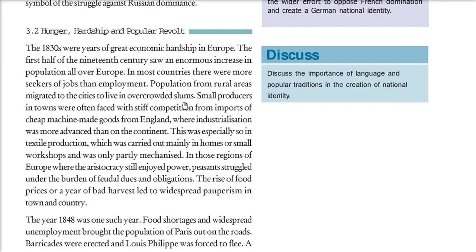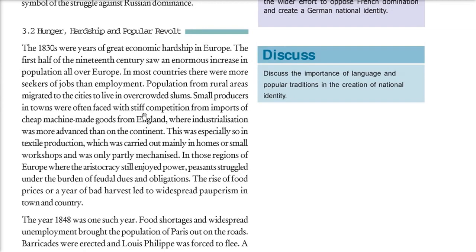The rise of food prices, bad harvests — all added to hunger and hardship. In the year 1848, because of food shortage and unemployment, the population of Paris came out and barricades were erected. Louis Philippe was forced to flee. The National Assembly came into action — it proclaimed a republic and gave voting rights to men above 21 years of age, guaranteeing employment through the right to work, and various national workshops were set up.